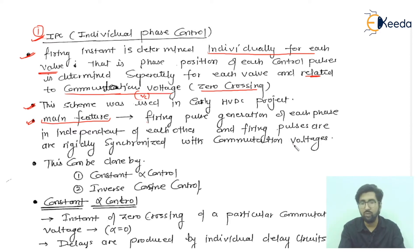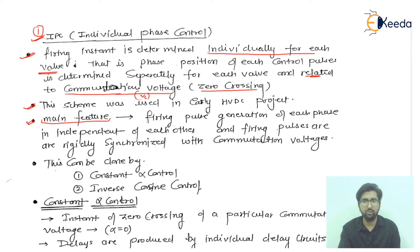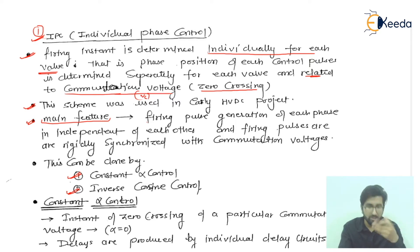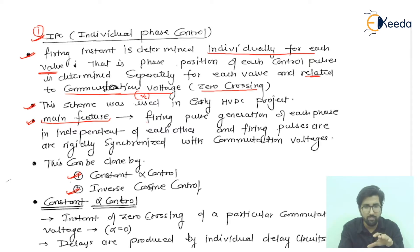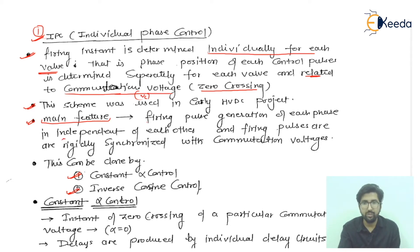The synchronization with commutation voltage follows the relation Vc = Vm·cos(α). This can be done by two main methods: the first is constant alpha control and the second is inverse cosine control. These are the two important ones we are discussing for individual phase control.